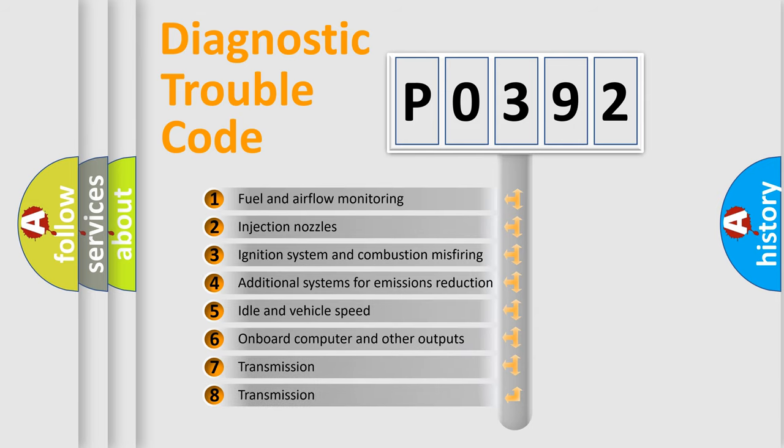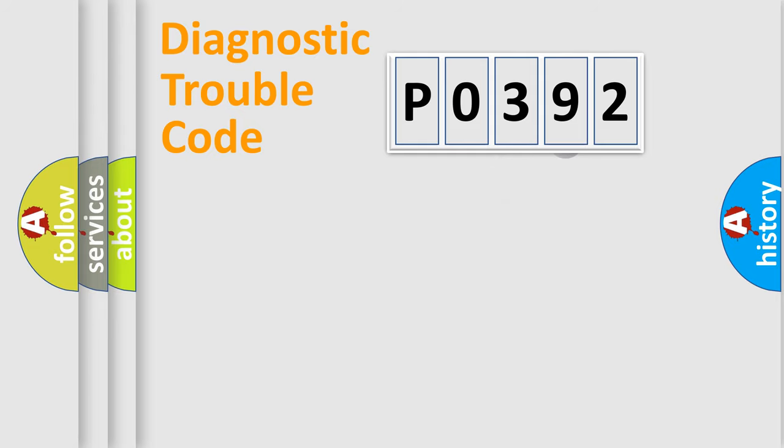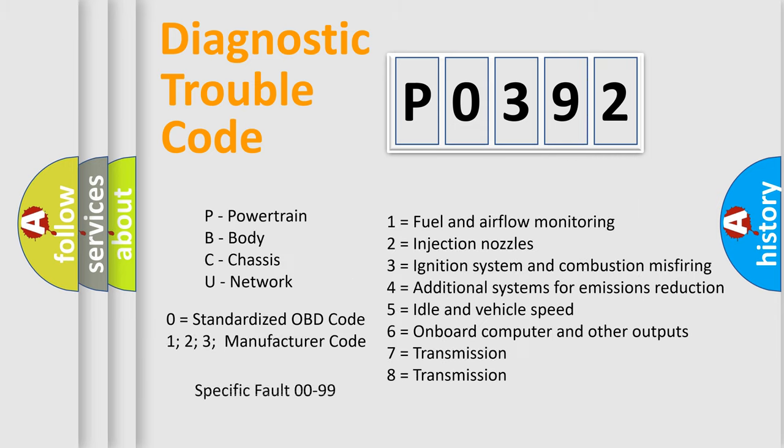The third character specifies a subset of errors. The distribution shown is valid only for the standardized DTC code. Only the last two characters define the specific fault of the group. Let's not forget that such a division is valid only if the second character code is expressed by the number zero.